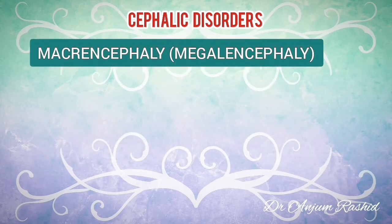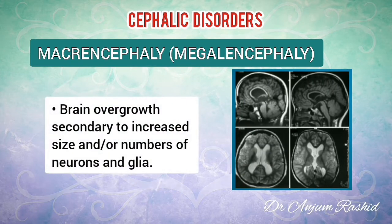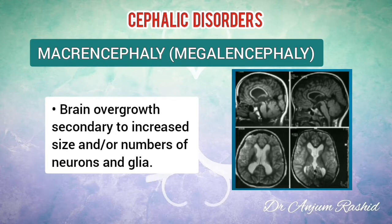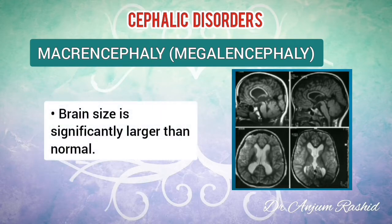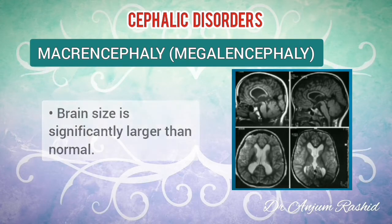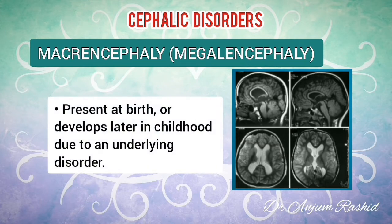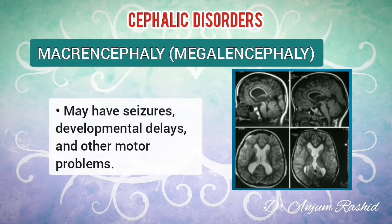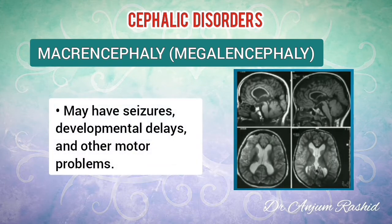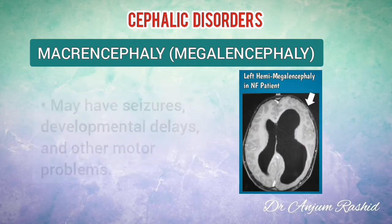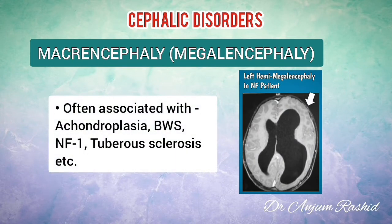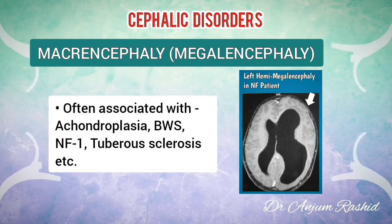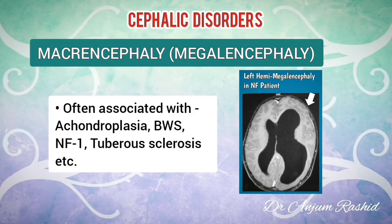Another type is megalencephaly. It is characterized by brain overgrowth secondary to increased size or number of neurons and glia. In this condition, brain size is significantly larger than normal. The condition is sometimes present at birth but may sometimes develop later in childhood due to an underlying disorder. Children may have seizures, developmental delays, and other motor problems. Megalencephaly is often associated with other disorders including achondroplasia, Beckwith-Wiedemann syndrome, neurofibromatosis, or tuberous sclerosis.